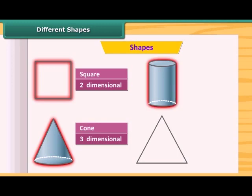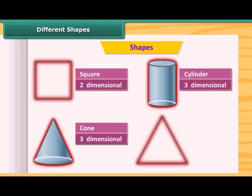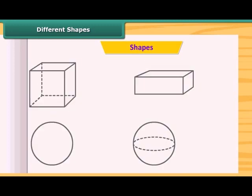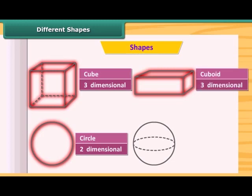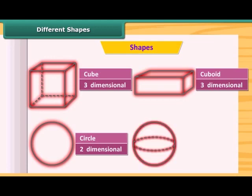This is a cylinder — this is also three-dimensional. This is a triangle and this is two-dimensional. Circle — two-dimensional. This is a cuboid and is three-dimensional. And this — is it a sphere? Yes, this is a sphere and is three-dimensional.